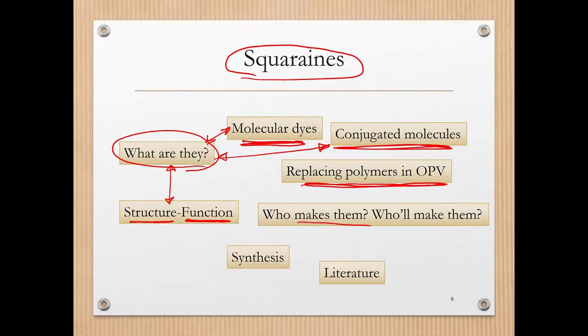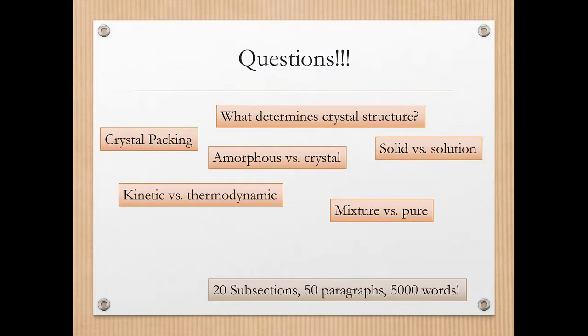Who makes the squaraines that I'm interested in? Who will actually make them for my project? I can start identifying other collaborators within the department who might help me. That's a synthesis issue and once again this comes down to the literature. I can find lots of material in the literature that helps me write my introduction. I mentioned earlier the importance of relentlessly asking questions. This helps us in our mind map.